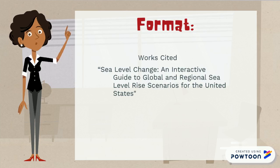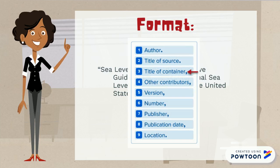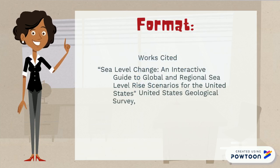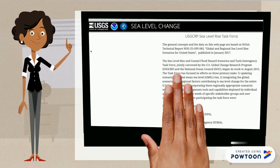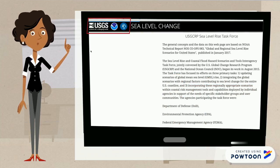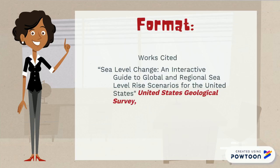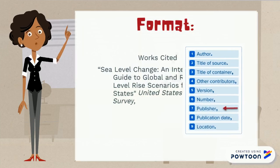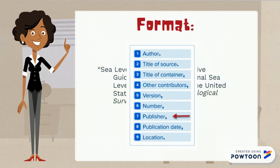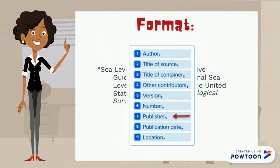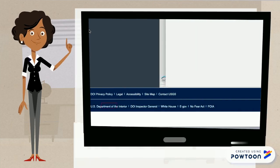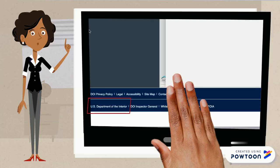If you're citing an entire website, then move on to the title of the container section. The title of the container is the name of the website where you found your information, and this is presented in italics. The publisher element is the name of the person or organization responsible for publishing the entire website. Sometimes the name of the publisher is the same as the title of the website — if this happens, you only need to list the name once. The publisher name is usually listed at the bottom of the website.